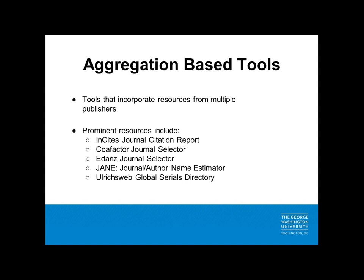Some of the most prominent aggregation-based tools include InCites Journal Citation Reports, the Coalfactor Journal Selector, Edans Journal Selector, the JANE Journal Author Name Estimator, and Ulrich Web Global Serials Directory.